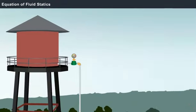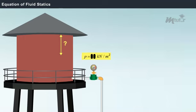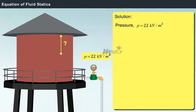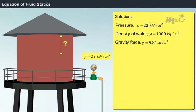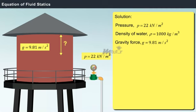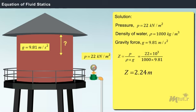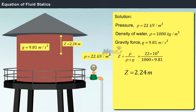Next, let us see how the equation helps us in calculating the depth of water for which the pressure is known. In a given overhead water storage tank, the pressure force is found to be 22 kN per meter square. The density of water rho equals 1000 kg per meter cube and gravity G equals 9.81 meters per second square. Substituting in the formula, Z equals P divided by rho into G, which equals 22 into 10 cube divided by 1000 into 9.81, which equals 2.24 meters. Thus, the depth of water at which the pressure of 22 kN per meter square acts is 2.24 meters from the free surface.